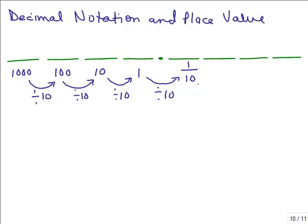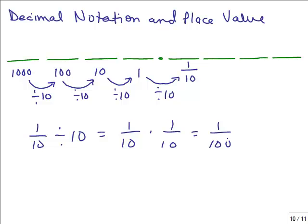To get the next place value over, we divide by 10 again. One-tenth divided by 10 is one-tenth times 1 over 10, which is one-hundredth. So the next place value is 1 over 100, then 1 over 1,000, then 1 over 10,000, et cetera.